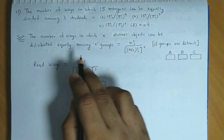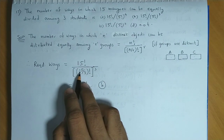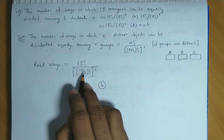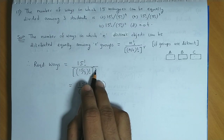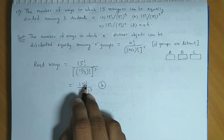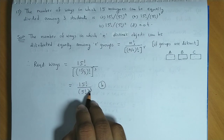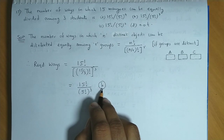So n is 15, giving 15! / (15/3)!³ = 15! / (5!)³. Each student gets a group of 5 mangos. The answer is 15! / (5!)³, which is option B.